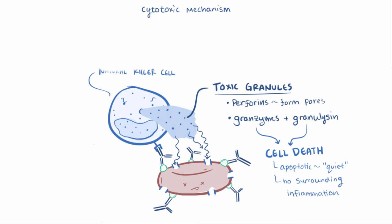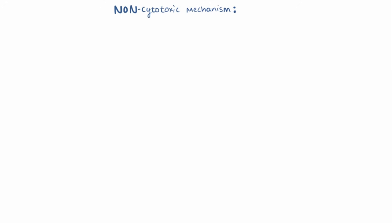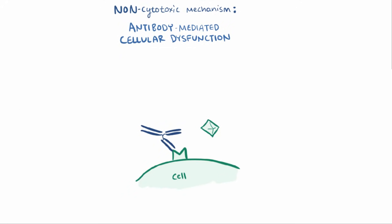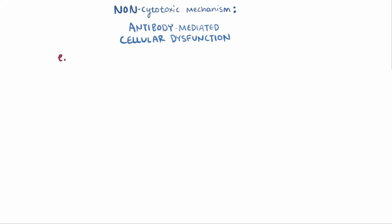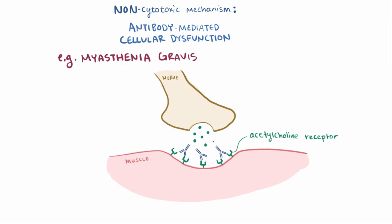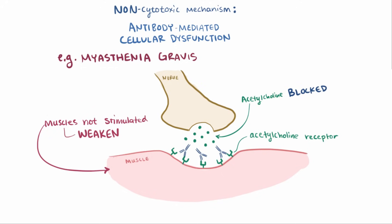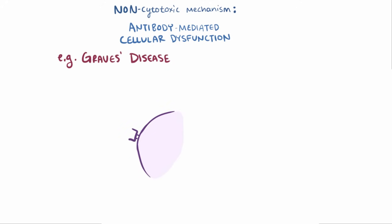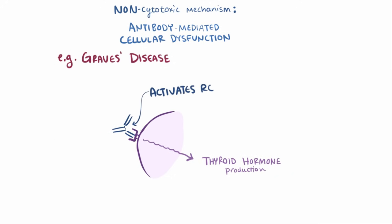There are also non-cytotoxic type 2 hypersensitivities, called antibody-mediated cellular dysfunction, where the antibody simply disrupts function rather than killing the cell. In myasthenia gravis, antibodies specific for the acetylcholine receptor in muscles block the binding of acetylcholine, causing muscles to not get stimulated and progressively weaken over time. In Graves' disease, antibodies target receptors that stimulate thyroid hormone production — but instead of just blocking them, they actually activate the receptors, causing overproduction of thyroid hormone, or hyperthyroidism.